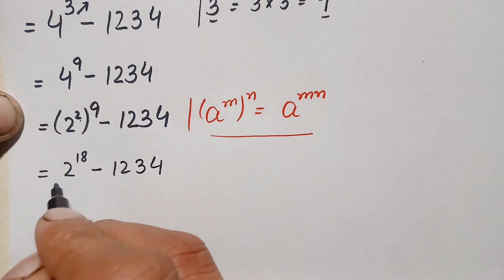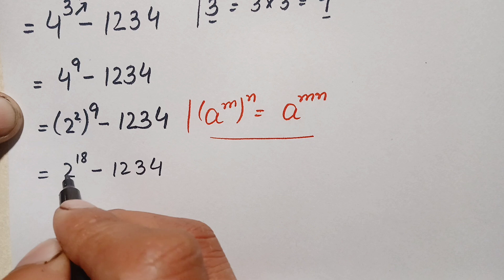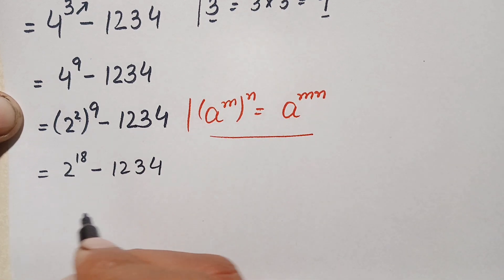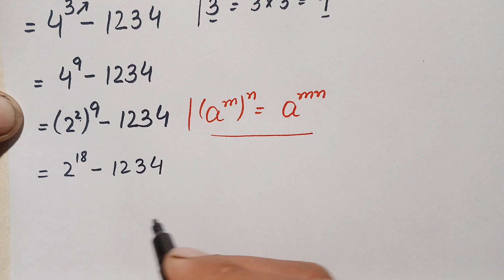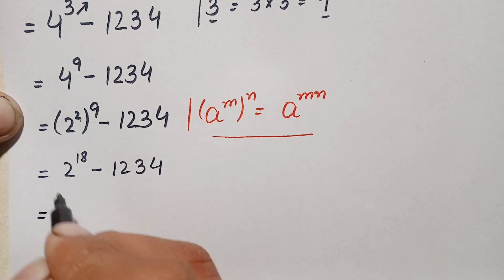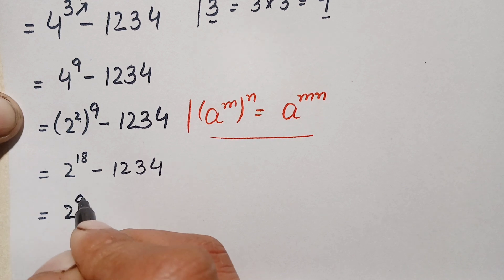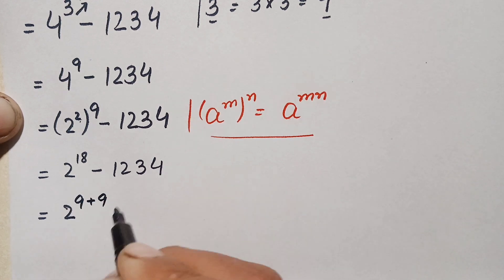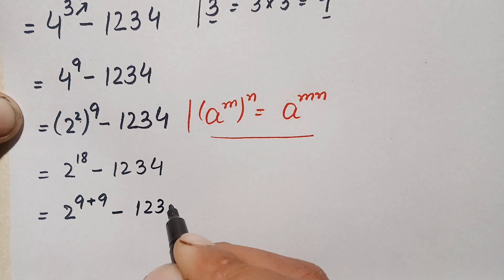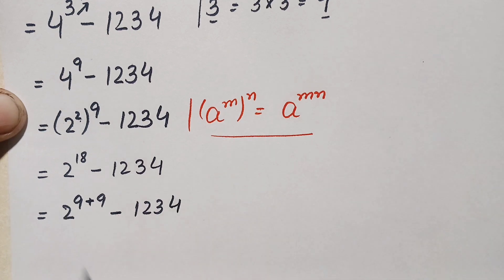Here we have to find out the value of 2 raised to power 18. This means we have to multiply 2 eighteen times. Multiplying 2 eighteen times would be a bit long, so we use another method. We can write 18 as the sum of 9 plus 9, so 2 raised to power 18 becomes 2 raised to power 9 plus 9, minus 1234.